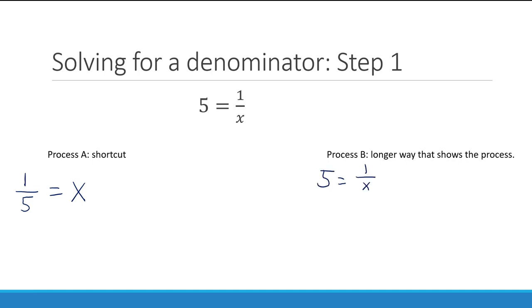In the longer way, we're going to use our baseline: what you do to one side you do to the other. So we'll multiply by x here and multiply by x here. That gives us 5x equals 1. Now to get the x by itself, we're going to divide by 5, divide by 5, which gets us x equals 1/5, which is of course what we saw from our shortcut because the shortcut is just working through this longer way much faster.